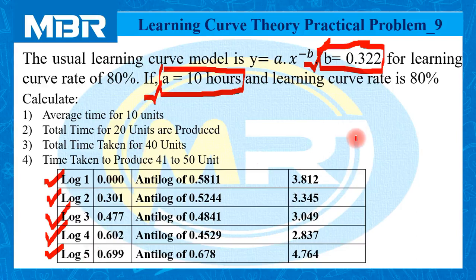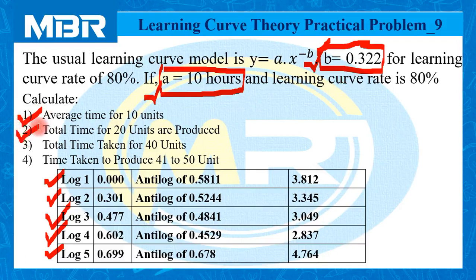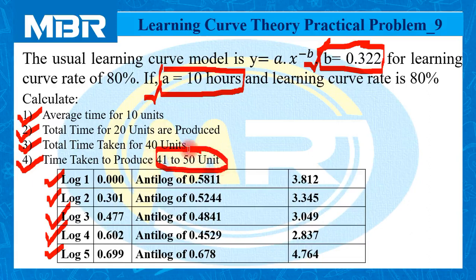After understanding this, we need to solve the given problem. The value of A is ready-made given to us, and B, the learning coefficient, is also ready-made given. First we need to calculate average time for 10 units, then total time for 20 units, then total time for 40 units, and finally time taken to produce units 41 to 50. Let us move to the solution.